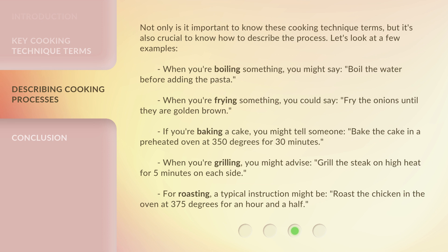When you're grilling, you might advise: "Grill the steak on high heat for 5 minutes on each side." For roasting, a typical instruction might be: "Roast the chicken in the oven at 375 degrees for an hour and a half."